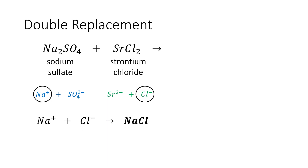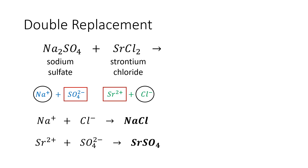Sodium will now combine with the second element, chloride. So the combination will form a compound called sodium chloride, while the first element of the second compound, which is strontium, will combine with the polyatomic anion of the first compound — sulfate. So they will form strontium sulfate. These two compounds will now be the products of our double replacement reaction.